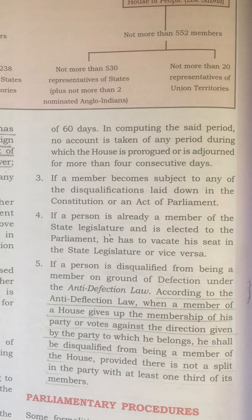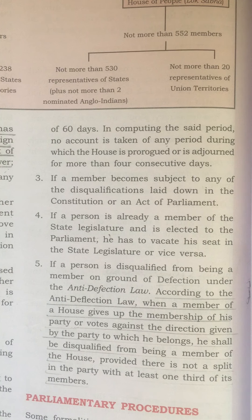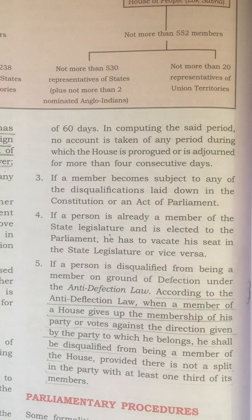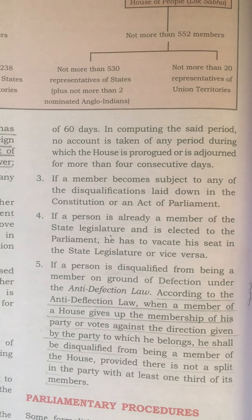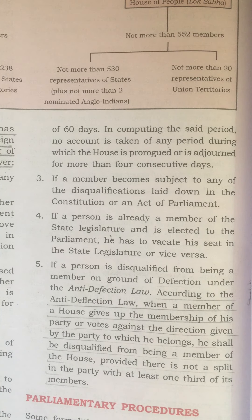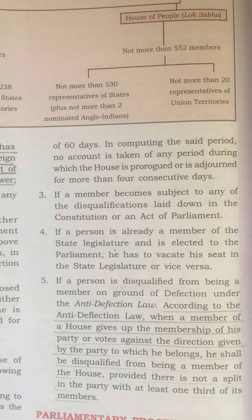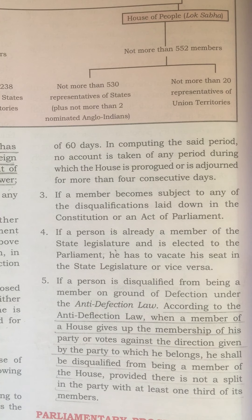In computing the said period, no account is taken of any period during which the house is prorogued or is adjourned for more than four consecutive days. So if a person is continuously absent from all meetings for a period of 60 days, the seat can be vacated. Also, if a member becomes subject to any of the disqualifications mentioned in the constitution or an act of parliament, the seat will be vacant. If a person is already a member of a state legislature and is elected to the parliament, he has to vacate his seat from the state legislature — at a time, he can be a member of only one house, either state legislature or parliament.